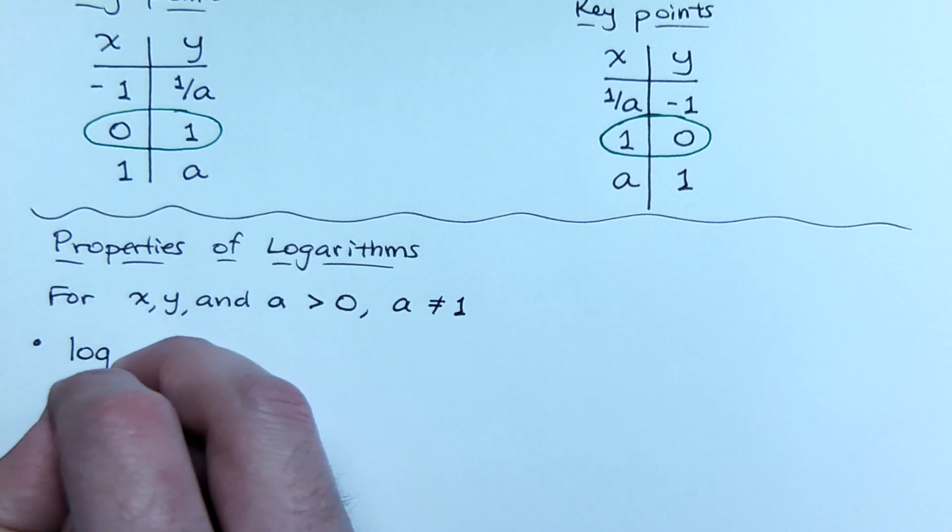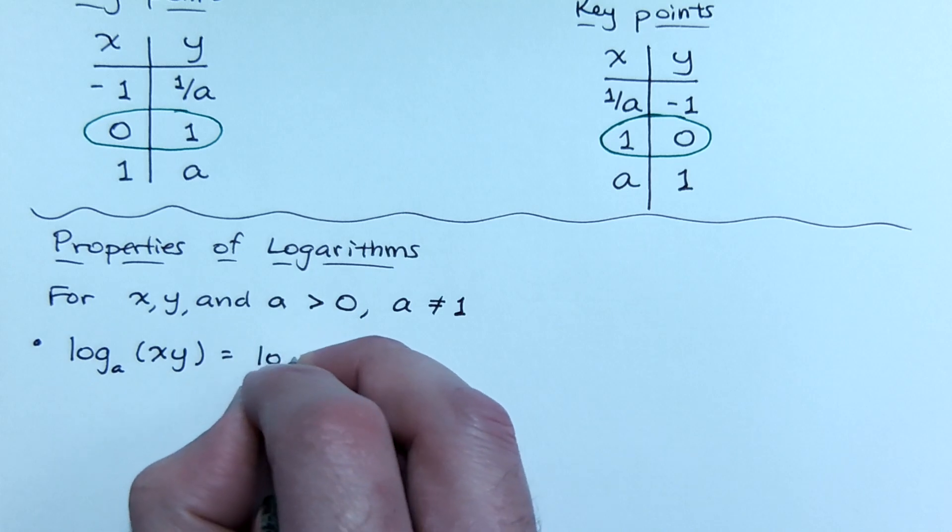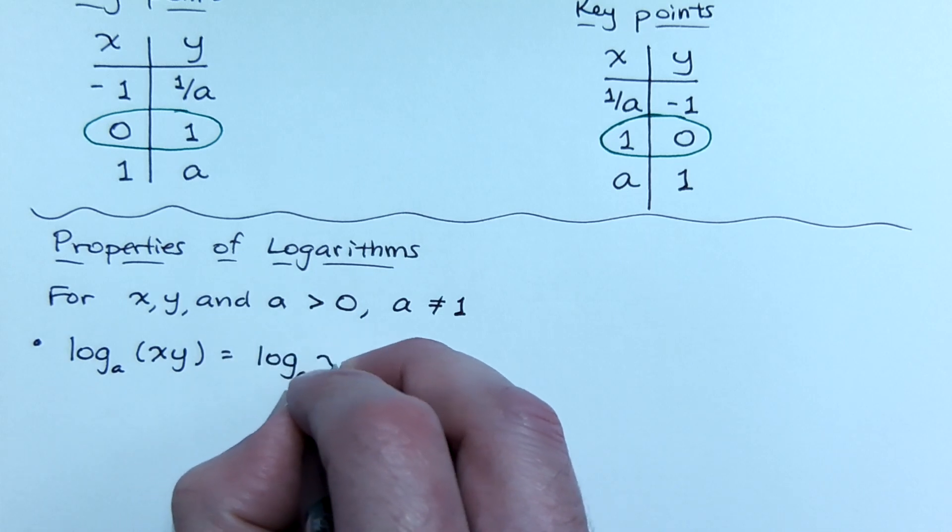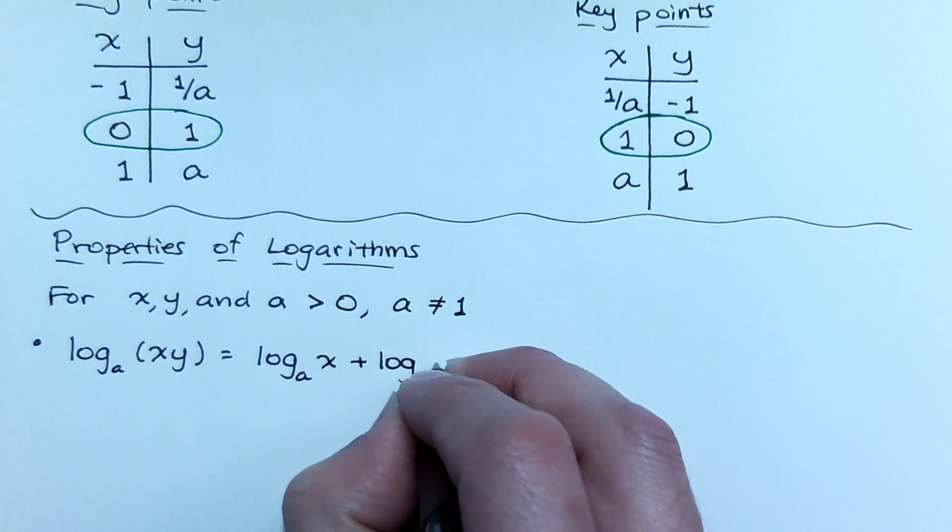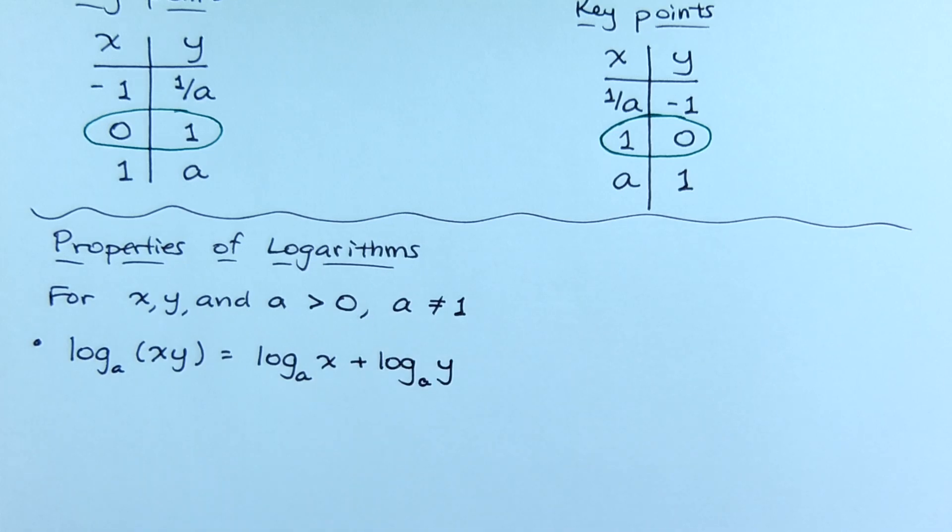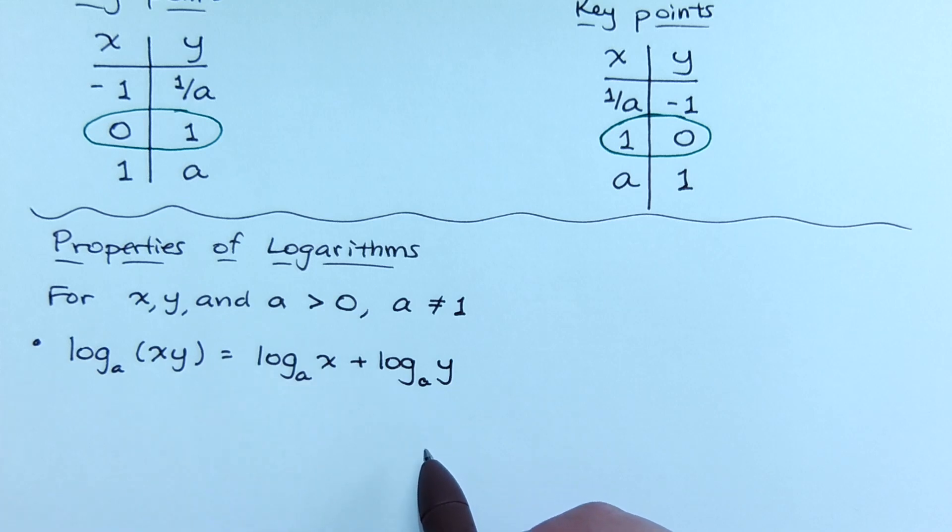Log base a of the product xy is the same as saying log base a of x plus log base a of y. So a product inside the logarithm can lead to splitting up the log and doing the sum of the log of those factors.